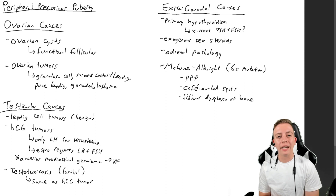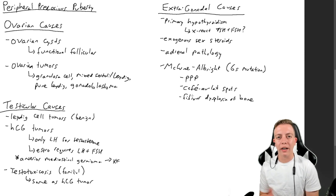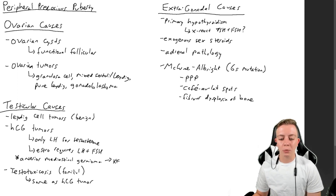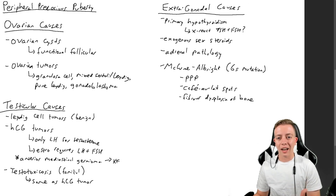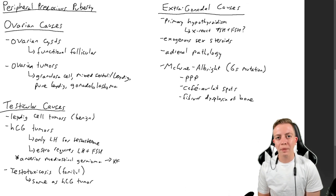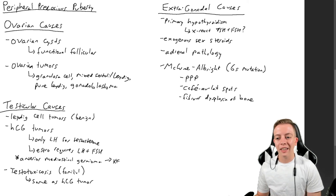That wraps up this video on peripheral precocious puberty. Next time we'll talk about normal variants of puberty onset and what that looks like. Please like the video, leave your comments and questions below, subscribe to the channel, and I'll see you in the next one.